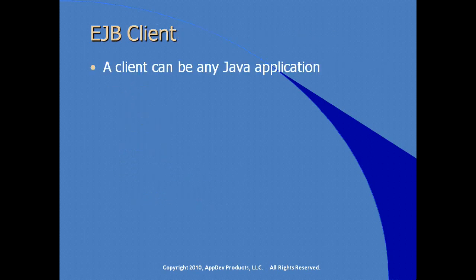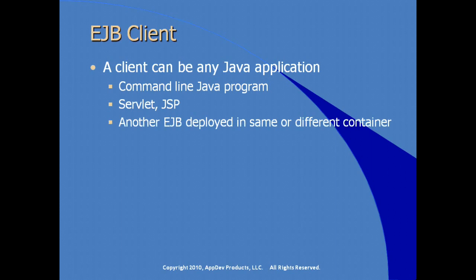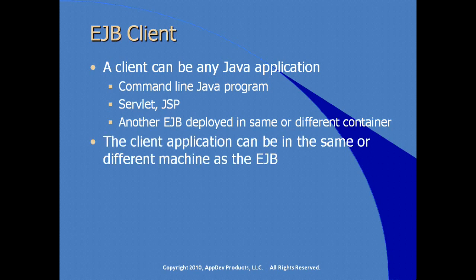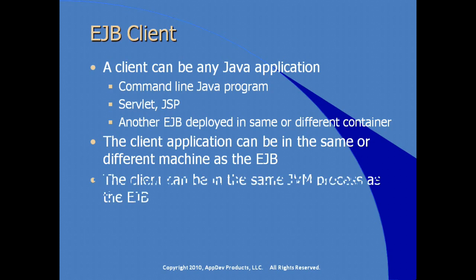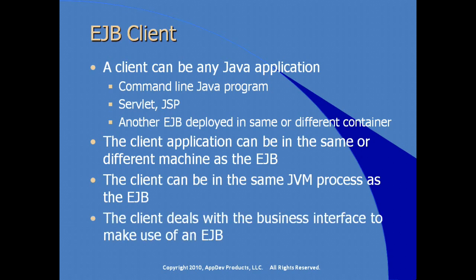An EJB client can be any Java application — a command-line program, a servlet, a JSP, or another EJB deployed in the same or a different container. The E in EJB stands for enterprise; these beans are designed to be deployed throughout an enterprise. A client can be on the same or a different machine as the EJB, even in the same JVM process. The client interacts with the EJB by calling its business interface.